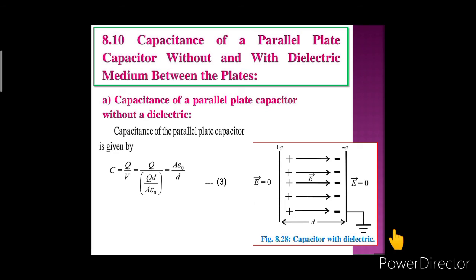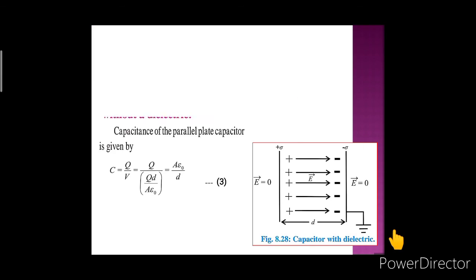We have discussed subtopic A: capacitance of a parallel plate capacitor without a dielectric, giving C equals epsilon naught A upon D. Subtopic B — capacitance of a parallel plate capacitor with a dielectric slab between the plates — will be covered in the next lecture. Thank you.